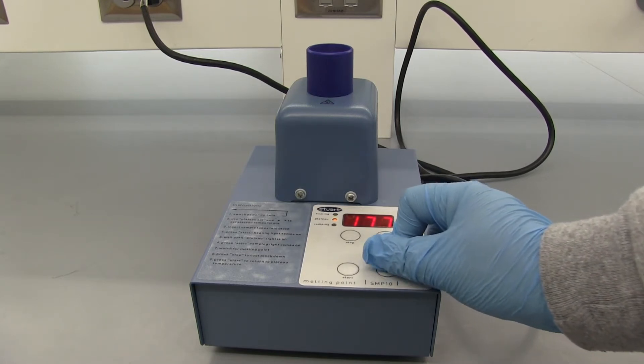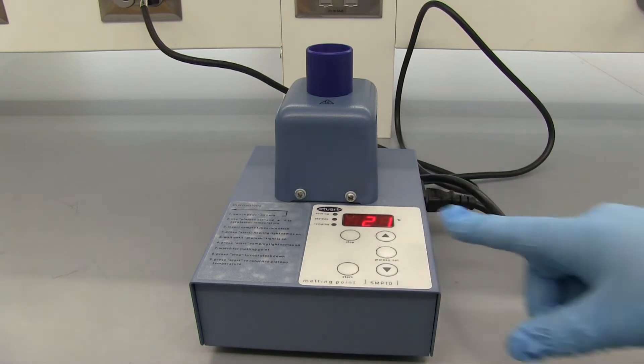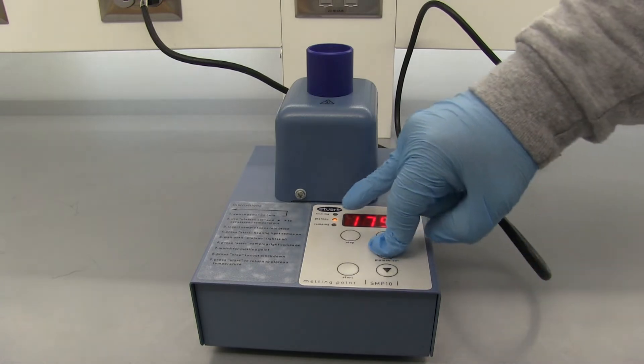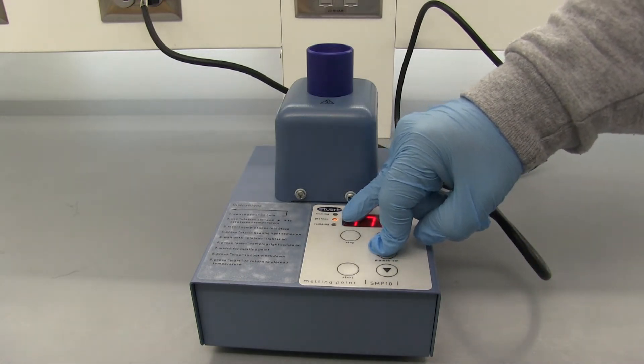For this fast melting point we're just looking for a range. Alright, so now if we hold the plateau set you can see that it's at 175 and the second light is blinking orange which means we are setting the plateau.